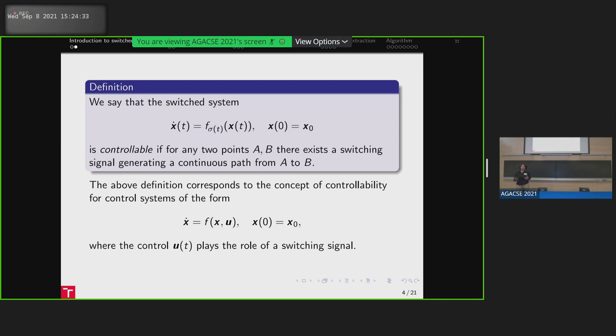So what are we interested in? We jump from the classical question what's considered with the switched systems. Usually we need to understand is it stable or not. But we want to understand if it's controllable. Controllable in which sense? If from any point to any point there exists a path, a path generated by a set of switched signals.